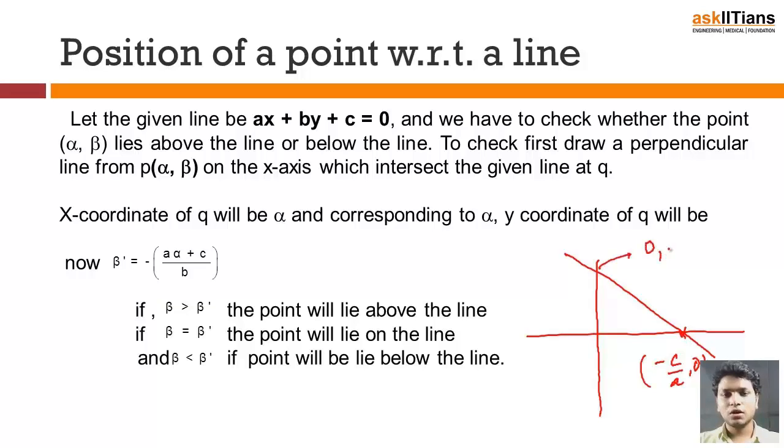And this point will be nothing but 0 comma minus c by b. You'll get these points by putting y equals to 0 for this and x equals to 0 for this. So we have got the point.